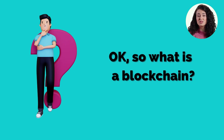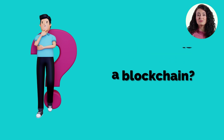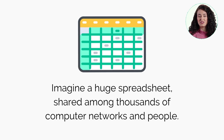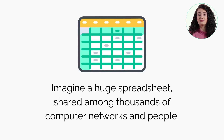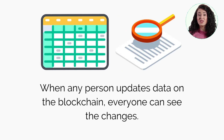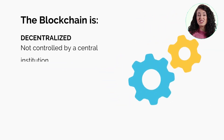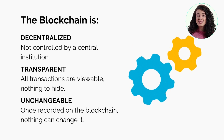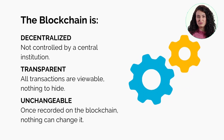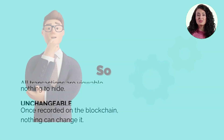Okay, so what is the blockchain? A blockchain is where all information for crypto is stored. Imagine a huge spreadsheet shared among thousands of computer networks and people. When any person updates data on the blockchain, everyone can see the changes. The blockchain is decentralized, meaning it's not controlled by a central institution. It's also transparent and unchangeable.